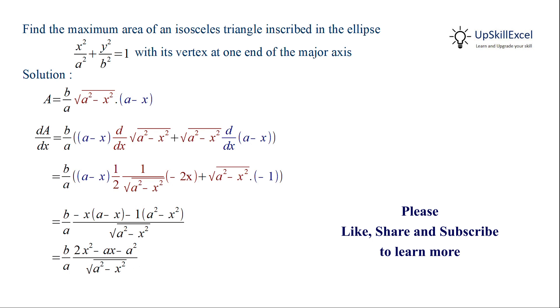Now we have to set dA/dx equal to 0 which means the quadratic equation 2x² - ax - a² = 0. Now we'll factorize this quadratic equation to get the value of x at which dA/dx is equal to 0.